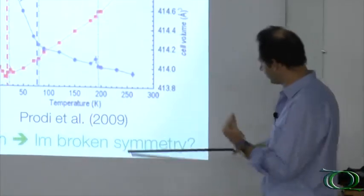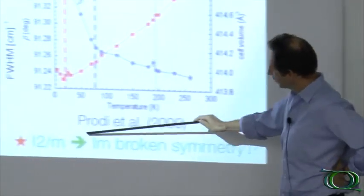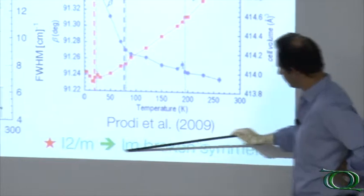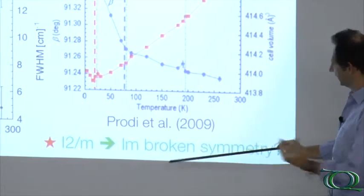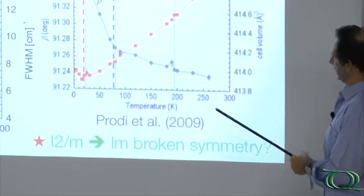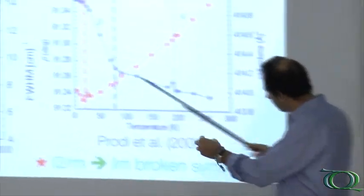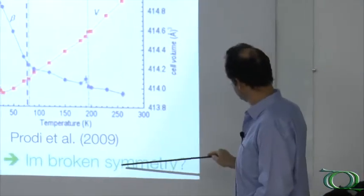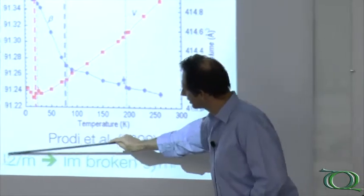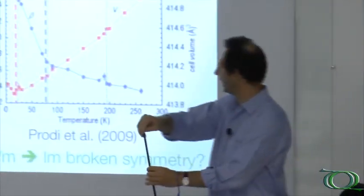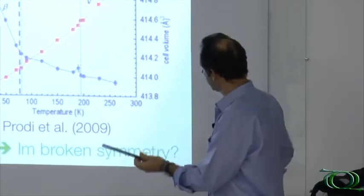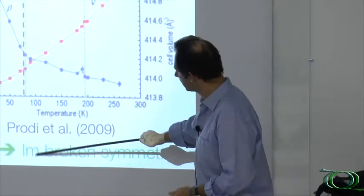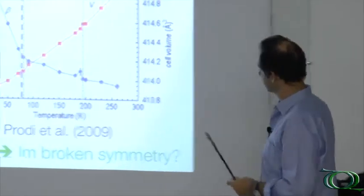While in the second transition nothing happens really, this enables us to guess that the monoclinic symmetry is broken. The center of symmetry is broken because of the appearance of ferroelectricity, and since the magnetostriction is in the AC plane, we can guess that what is lost is the twofold rotation axis of the AC plane, and just the mirror plane remains as a symmetry operation.